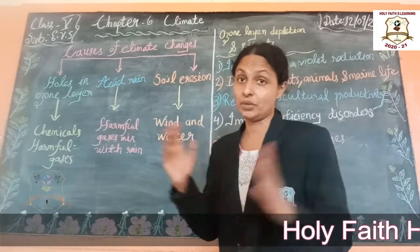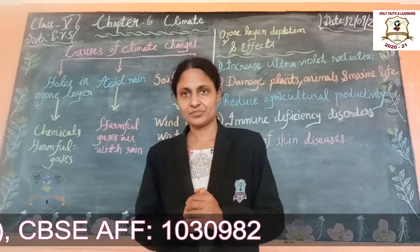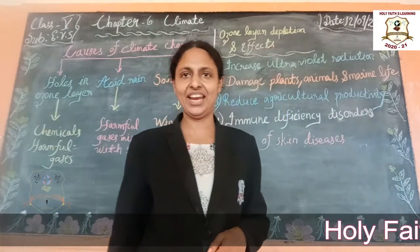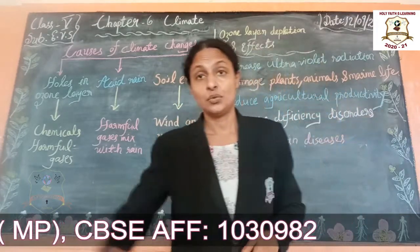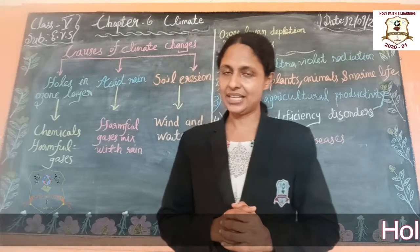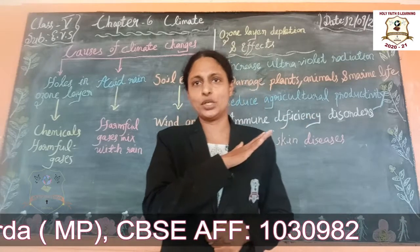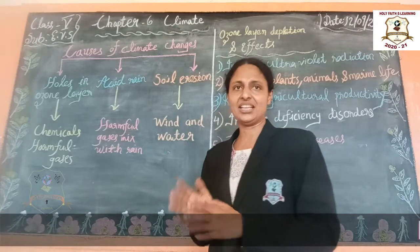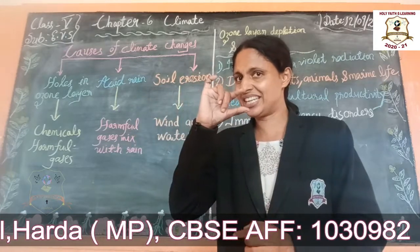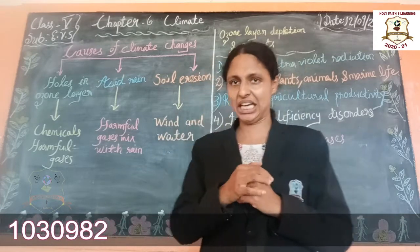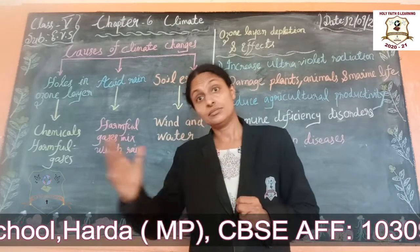Then soil erosion — you already know what soil erosion is. Because of wind and water, the topsoil flows away. Soil erosion is the removal of soil due to the effect of wind and water. Erosion takes away the fertile topsoil which is only a few centimeters thick. This topsoil has many nutrients that are helpful for the growth of plants. If topsoil is gone, only subsoil remains.